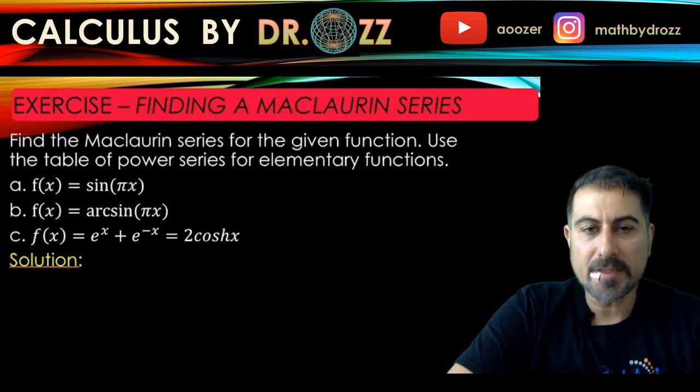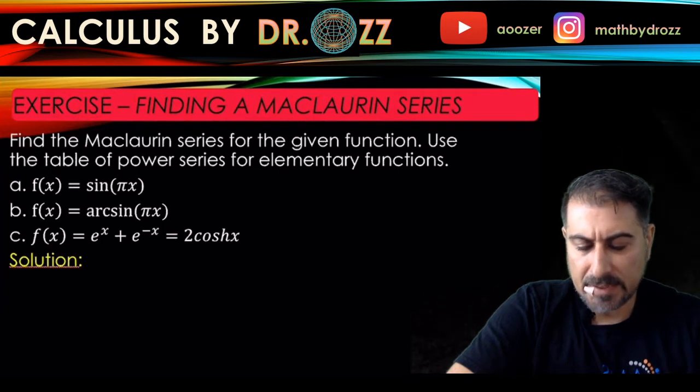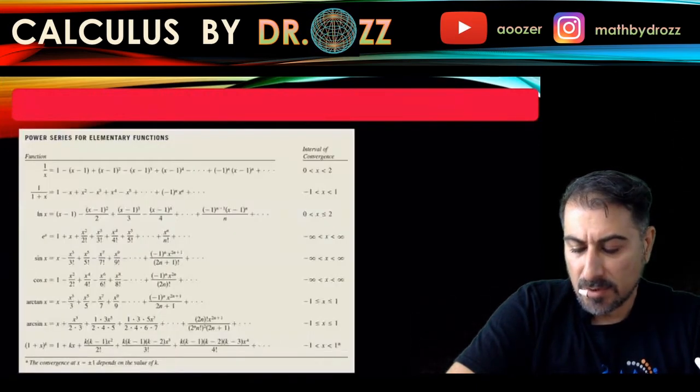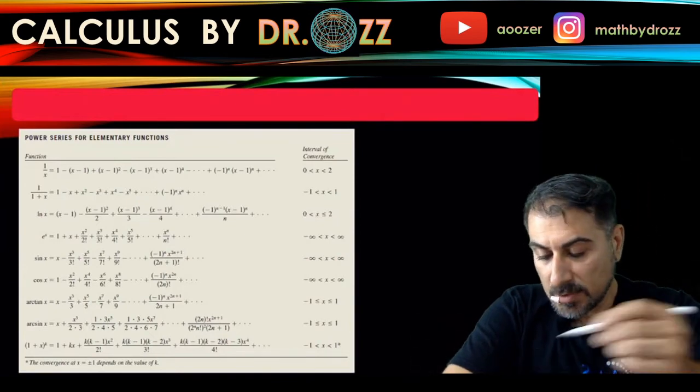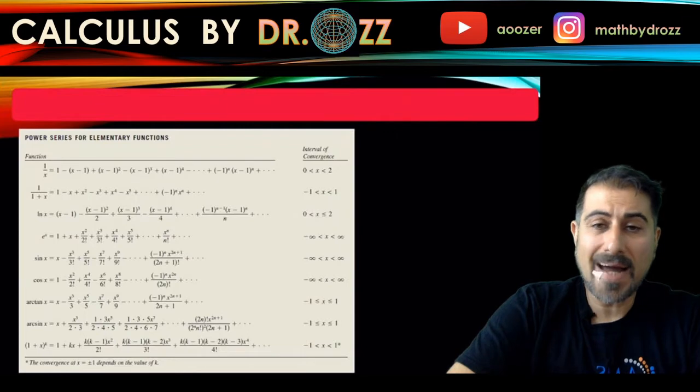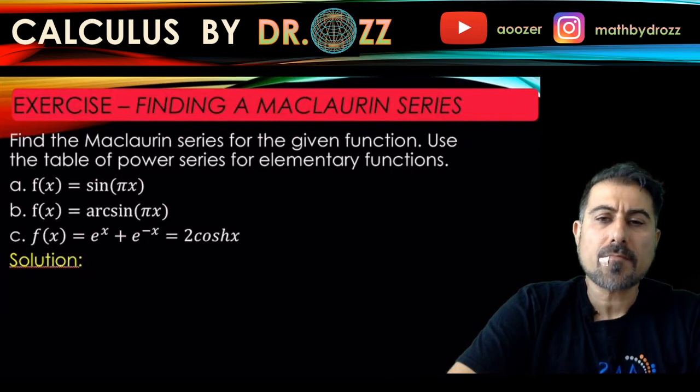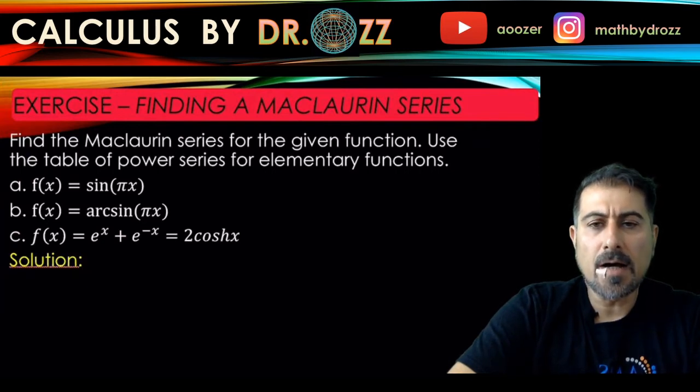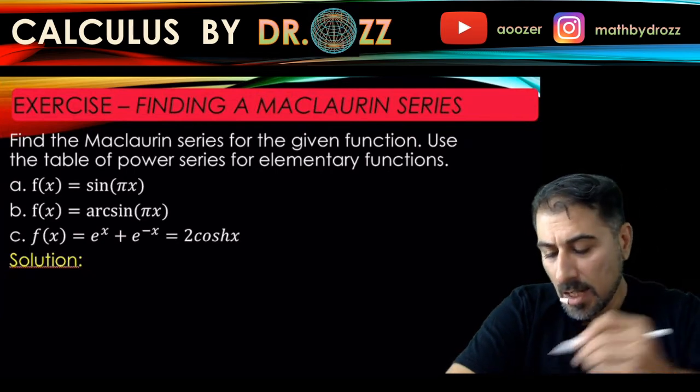So we're going to find the Maclaurin series for the given functions. And these are looking like known functions Maclaurin series and we have a table of Maclaurin series. So we can make use of those if necessary. And in fact, if you look at the first example here, we have the sine of pi x in part a. So if we know the power series of sine x, I think that would be very helpful because all we're going to do is replacing x by pi x, but you've got to be very careful about the interval of convergence.